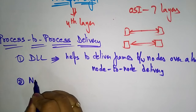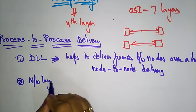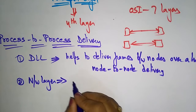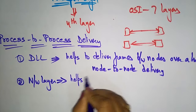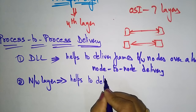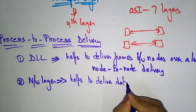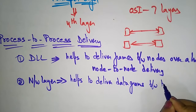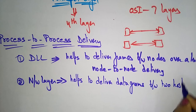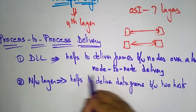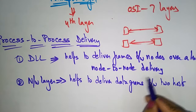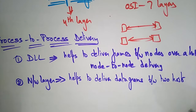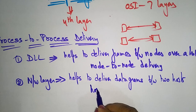Coming to the network layer — the network layer helps to deliver datagrams between two hosts. So we call it host-to-host delivery.